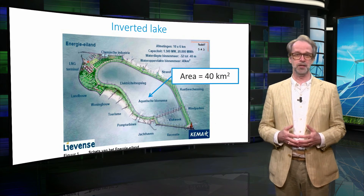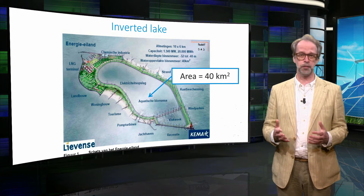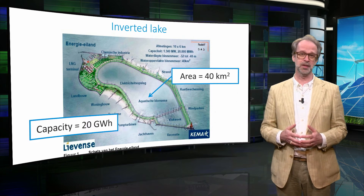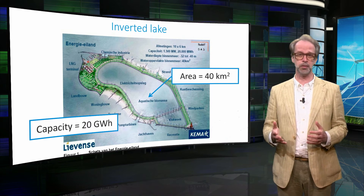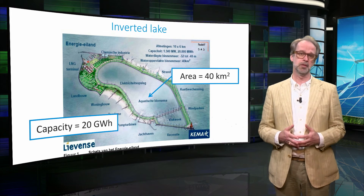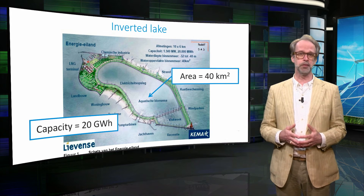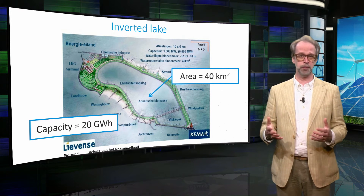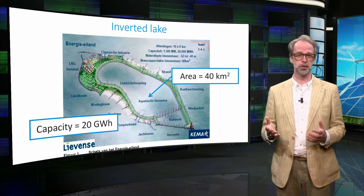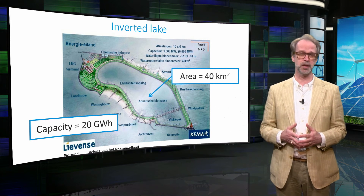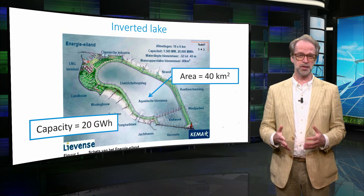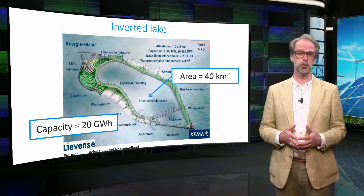This lake, for instance, has a surface area of 40 km² and its storage capacity is 20 GWh. Given an average PV power of around 8 watts per square meter, this would cover the day-night cycle of around 200 km² of PV cells. However, such an island only exists so far on the drawing board.